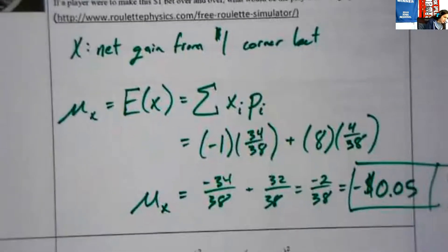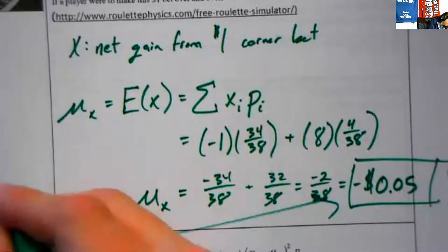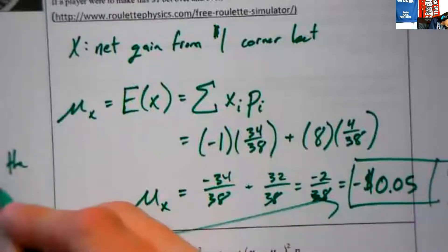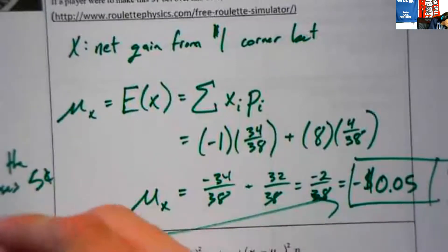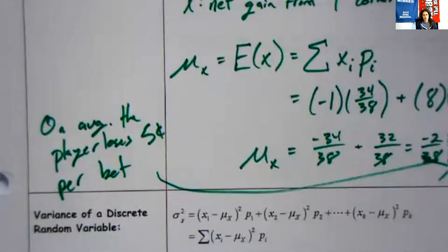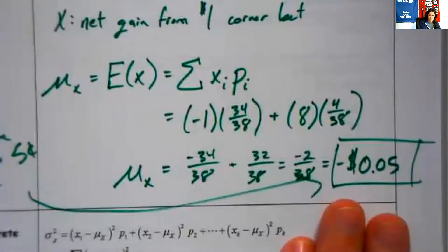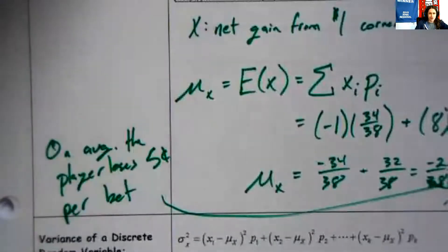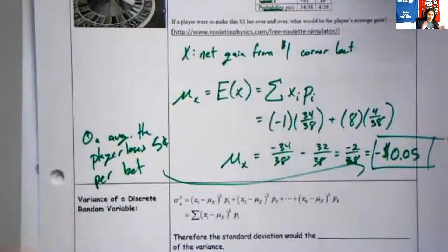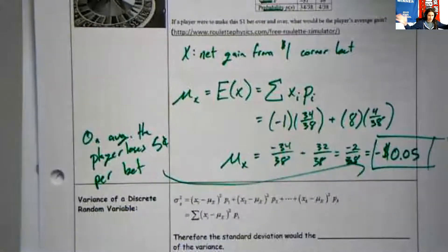We're going to lose a dollar 34 out of 38 times, and we're going to win eight dollars 4 out of 38 times. This thing is a weighted average. You do the math there, you're going to get negative 34 over 38 plus 32 out of 38 gives us negative 2 over 38. You get, we're going to lose 5 cents equals negative dollar sign 0.05. That means that on average, the player loses 5 cents per bet.